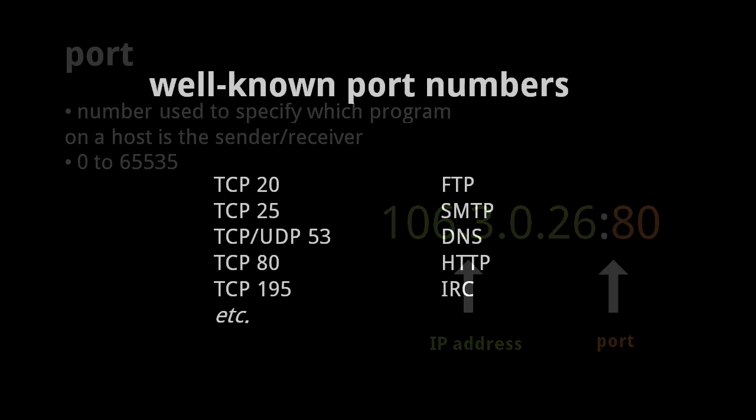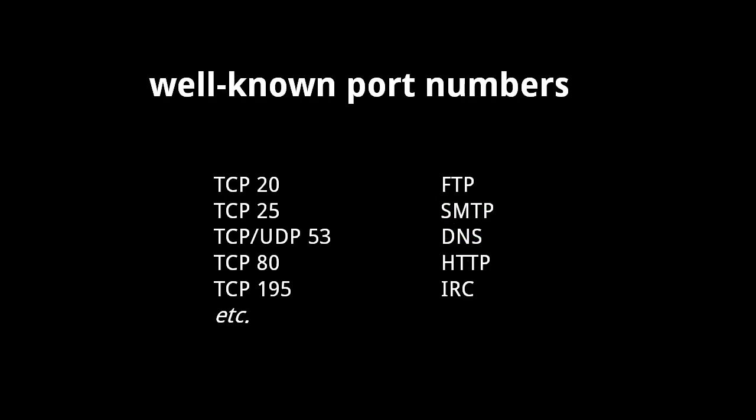For some networking applications, there is a so-called well-known port number. Web servers, for example, almost always use TCP port 80. FTP servers, for another example, usually use TCP port 20. Understand that TCP and UDP ports are separate address spaces, so TCP port 80 is a different port than UDP port 80.